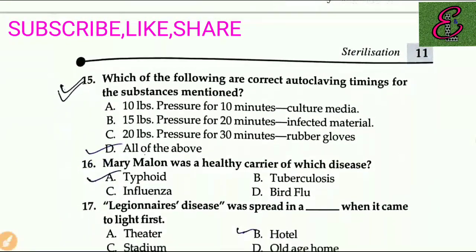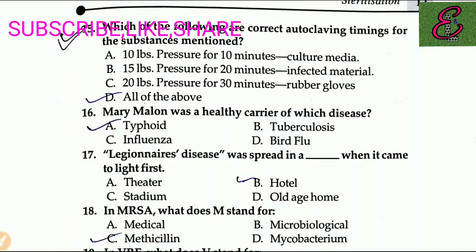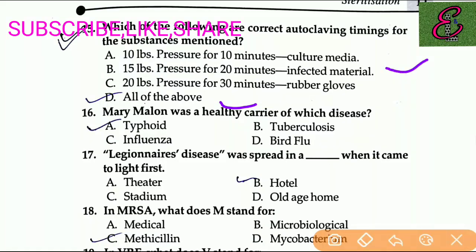Question number fifteen: which of the following are the correct autoclaving timings? The right answer is all of the above — 10 LBS pressure for 10 minutes for culture media, 15 LBS pressure for 20 minutes for infected material, and 20 LBS pressure for 30 minutes for rubber gloves.